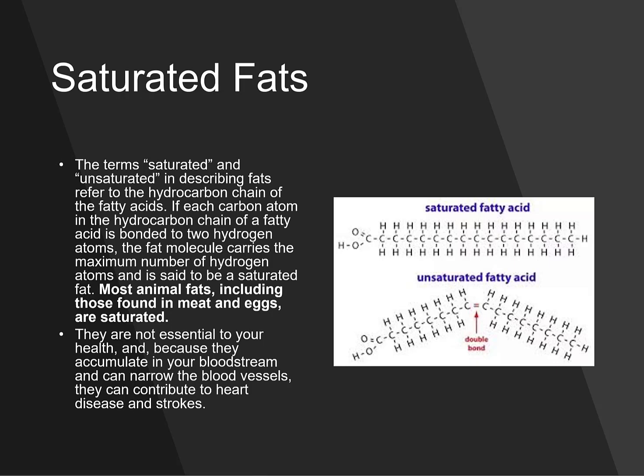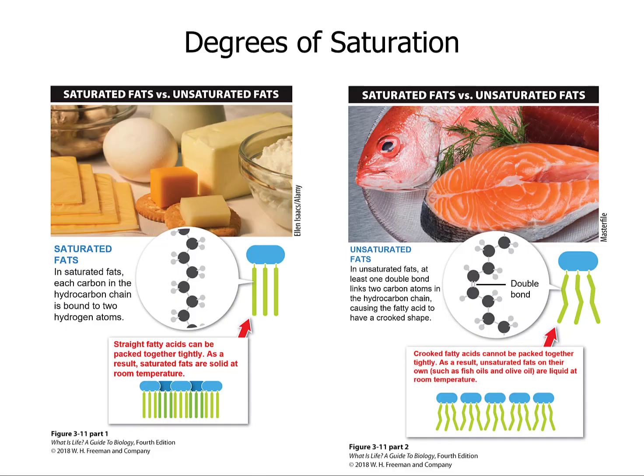Most animal fats, including those found in meat and eggs, are saturated. These are not ideal for your health because they accumulate in your bloodstream, can narrow blood vessels, and contribute to heart disease. We're going to talk about the difference in the way these stack.